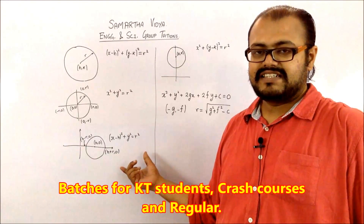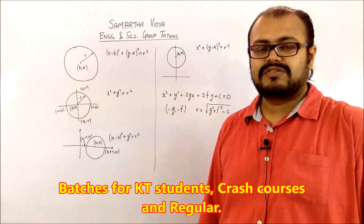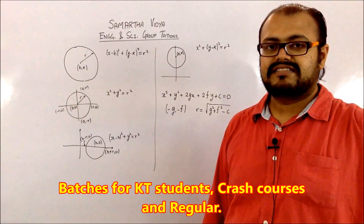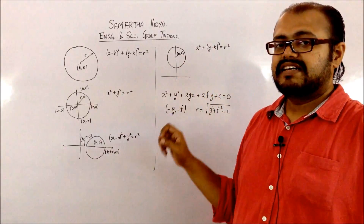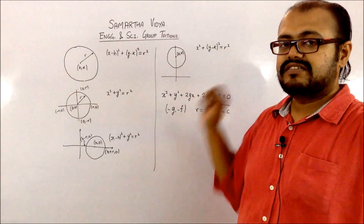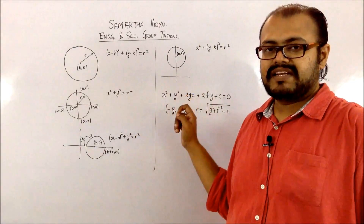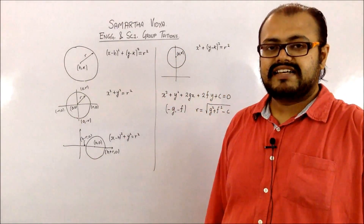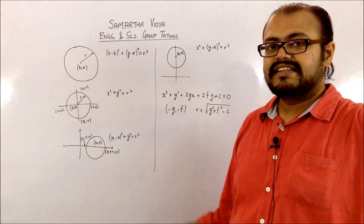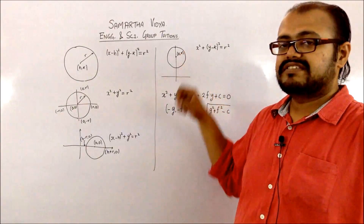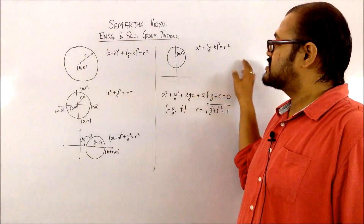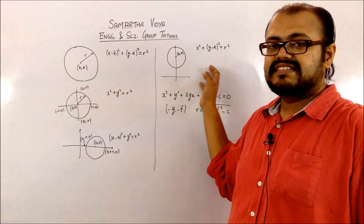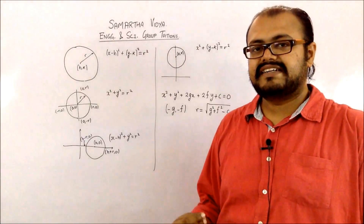A quick understanding of the logic helps you recall these equations when solving. If the center lies on the y-axis, the center is (0, k) and the equation becomes x² + (y - k)² = r². Applying similar logic, if the circle is touching the x-axis, then k equals the radius. The equation then becomes x² + (y - r)² = r², which you can expand into the standard form.